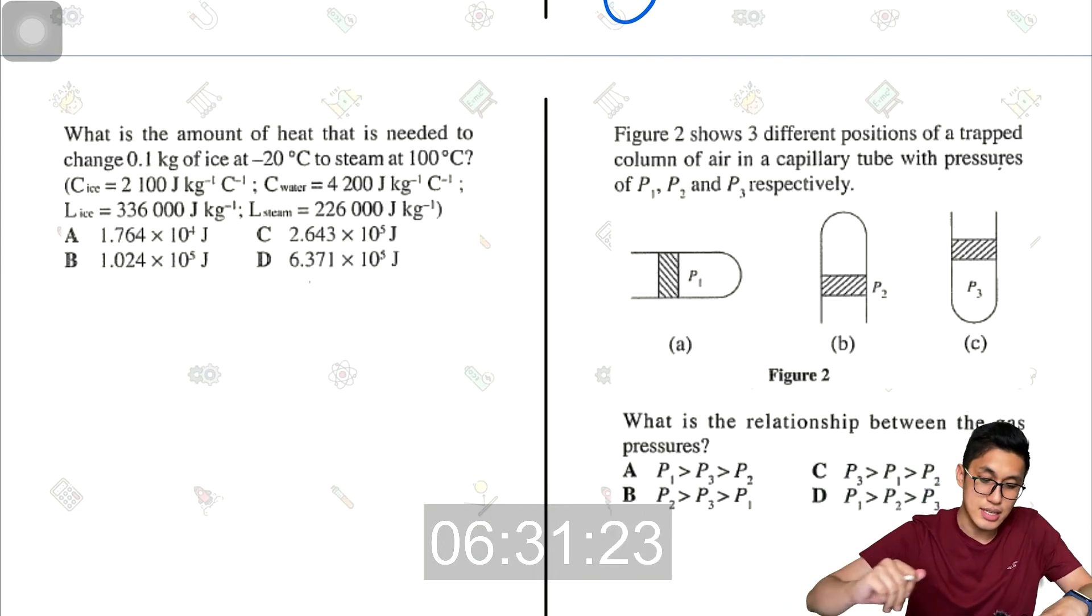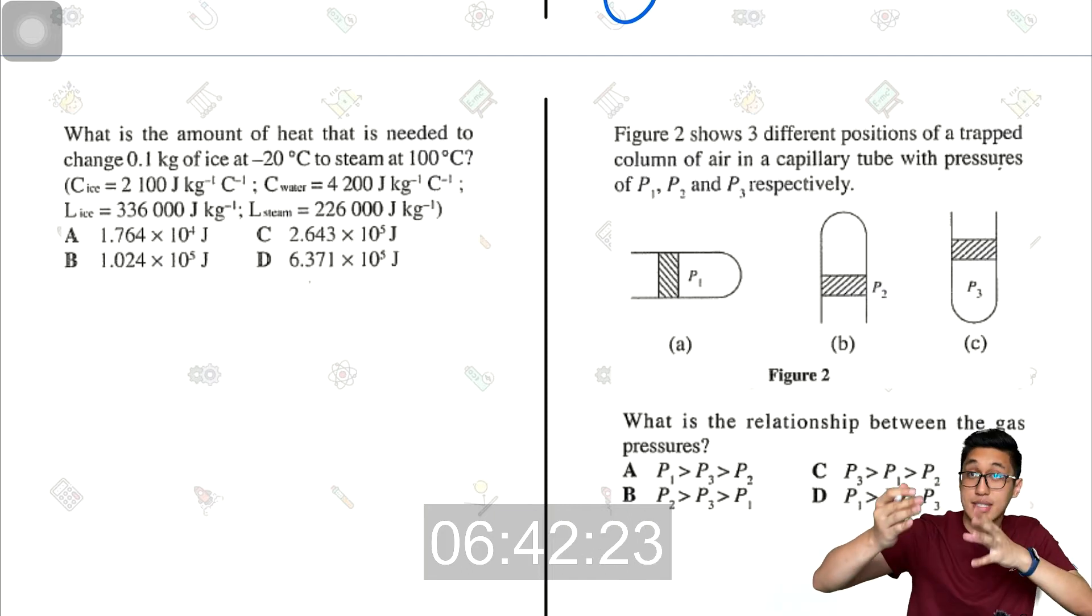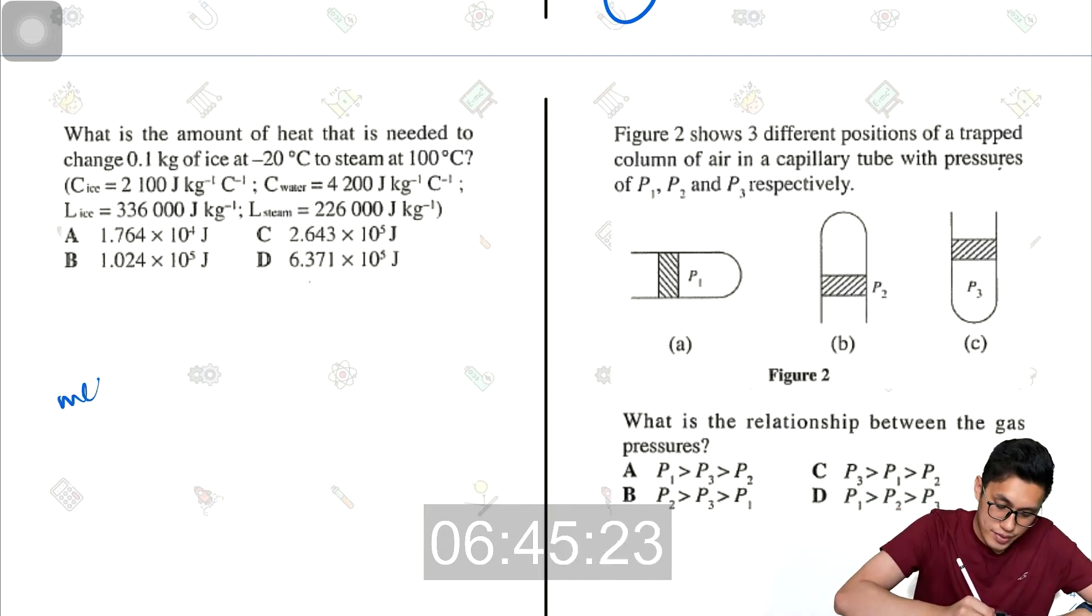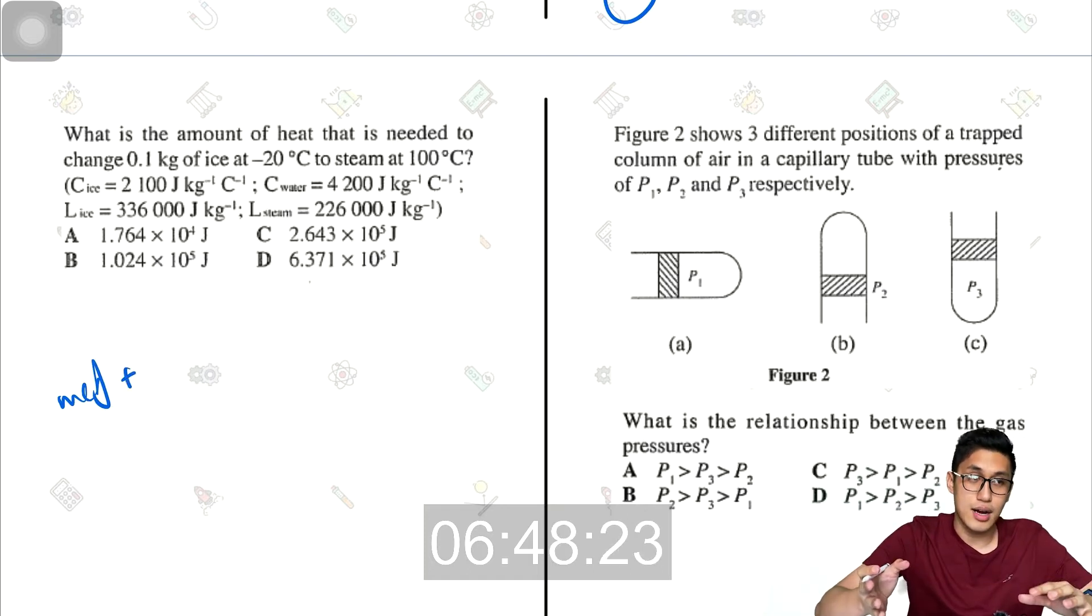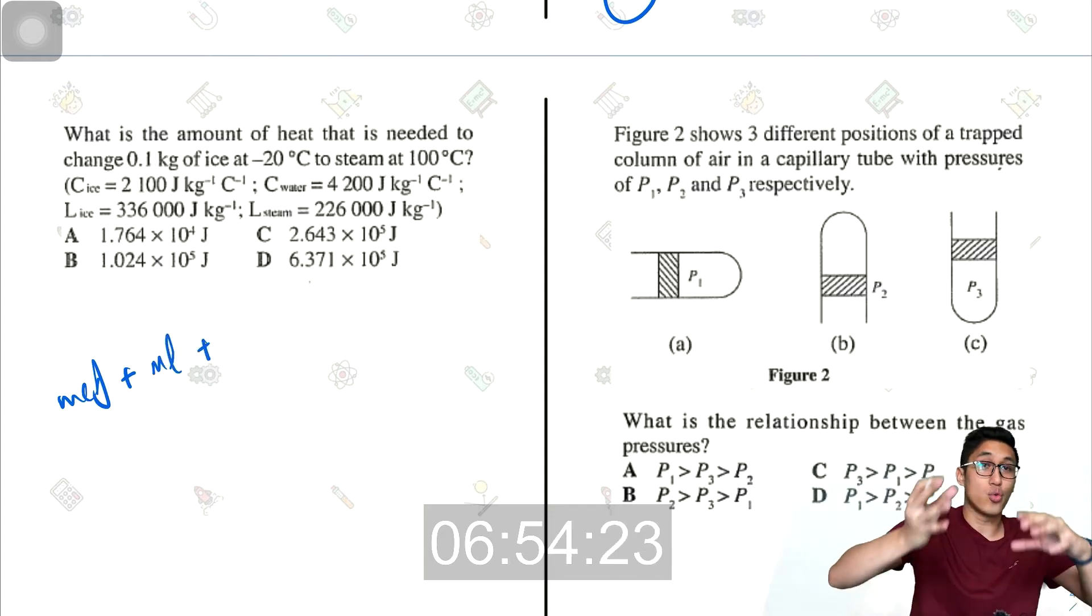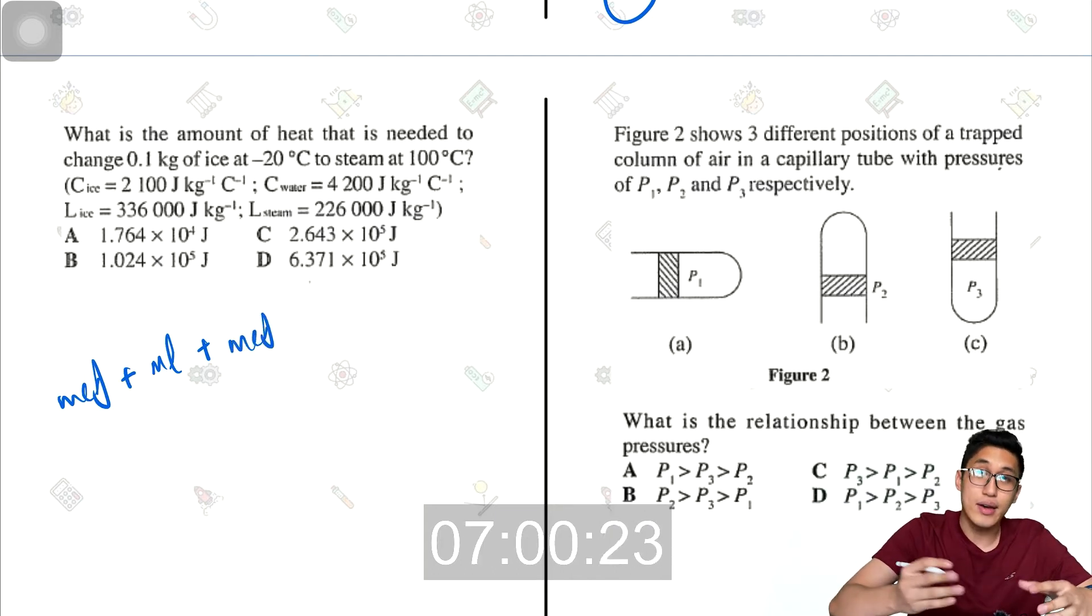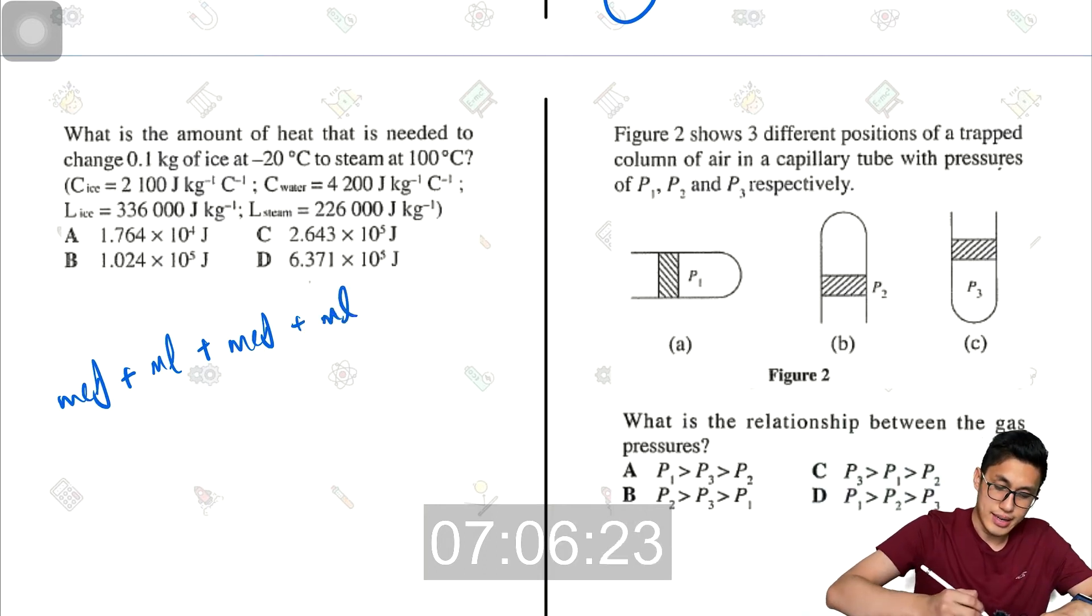Next, what is the amount of heat that is needed to change 0.1 kg of ice at negative 20 to steam at 100 degrees Celsius? This is going to be long. So to change ice from negative 20 to zero, you have to use the MC theta of ice plus ice at zero to water at zero, that is ML plus water at zero to water at 100 degrees Celsius, that's MC theta. And again, water at 100 to steam at 100, that is another ML.